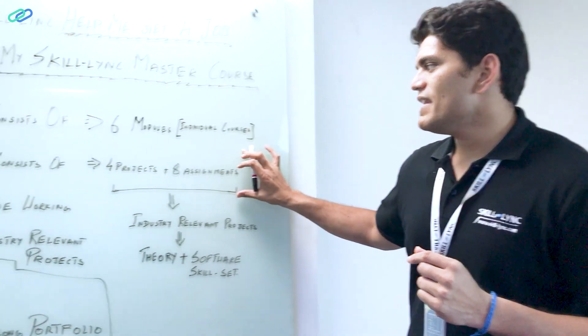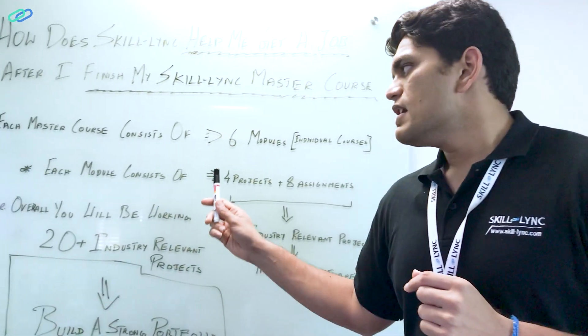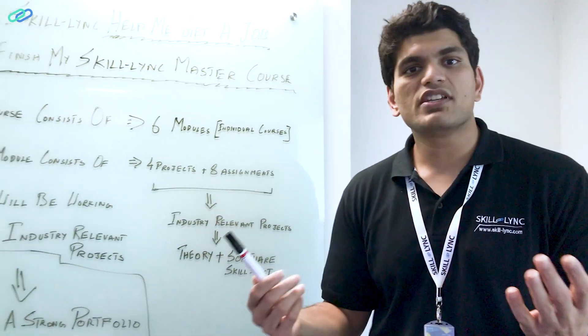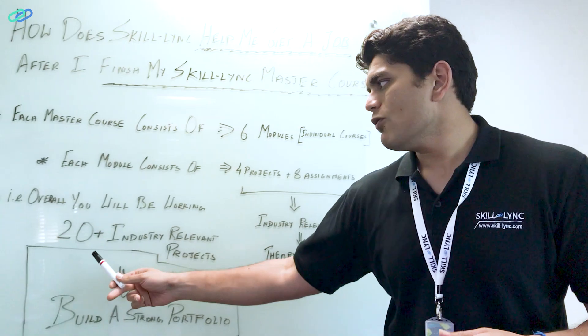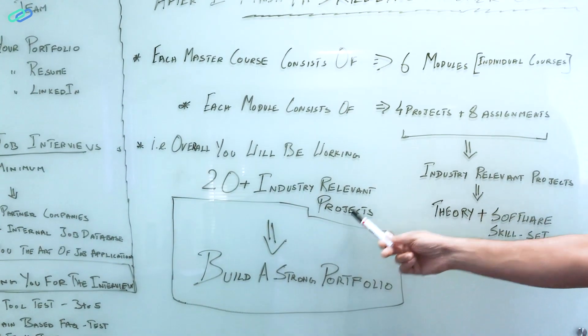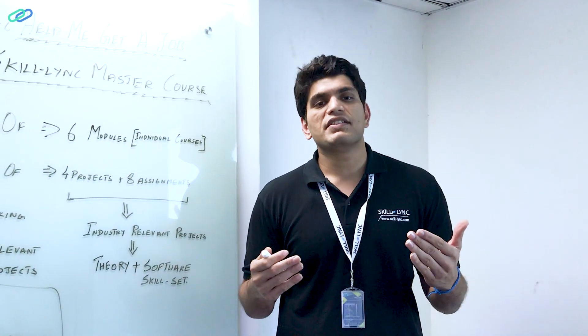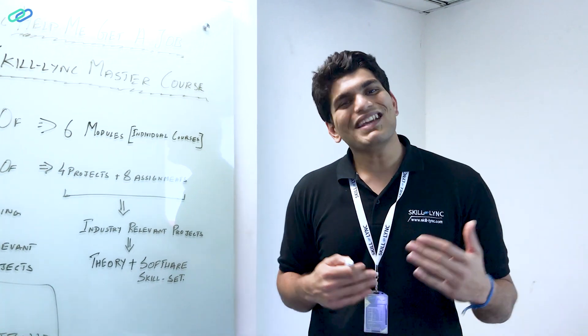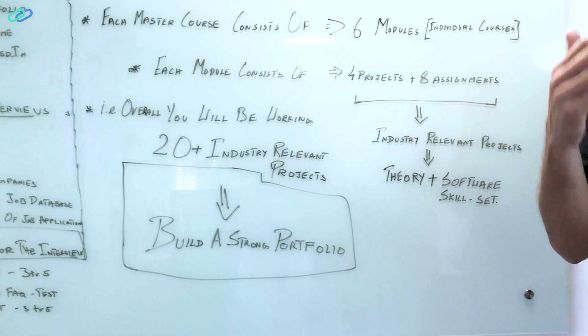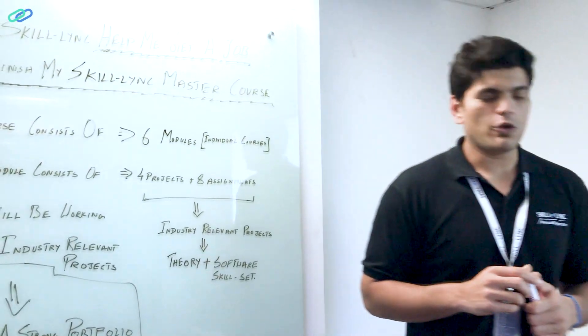When you work on four projects and eight assignments in one coursework, what happens when you work on four projects and eight assignments in six courses? You multiply it by six. Overall, by the end of a Skilllink master course, you work on 20 plus industry-relevant projects. When you have 20 plus industry projects, you basically create a portfolio. You build a strong portfolio. Let me show what a portfolio is.